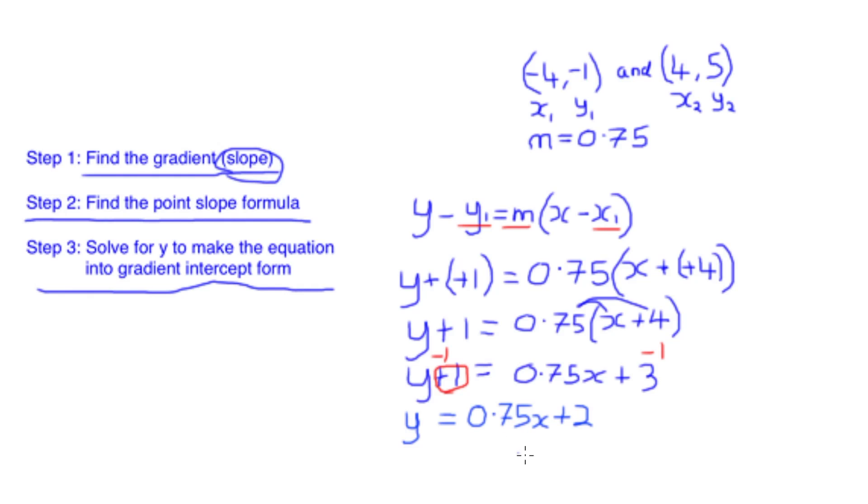So y equals 0.75x plus 2. We can figure out if we're correct or not by simply taking each of our coordinates we took earlier. 0.75 times -4 gives us -3, and if we add the 2 to that we get -1, which gives us our y coordinate. The same for our second coordinates: if we do 0.75 times 4, which is 3, plus 2 gives us 5, which is our y coordinate again.